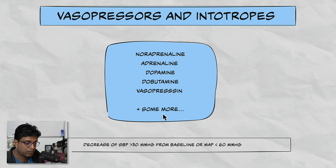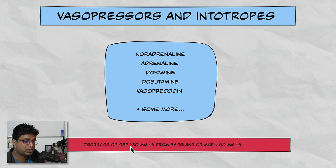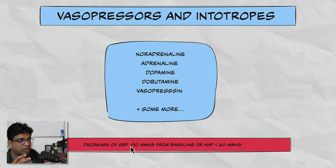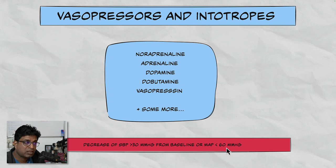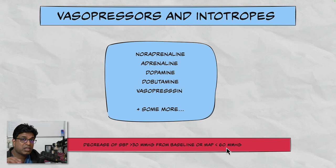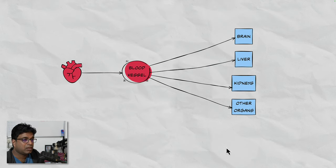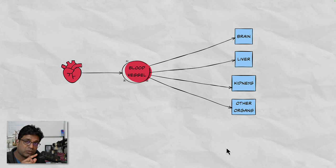What do we mean by shock? If from the baseline the systolic blood pressure has fallen more than 30 mmHg — for example, if you know the patient's blood pressure constantly remains at 140 or 150 systolic — a drop of more than 30 from that is considered shock. Or if the mean arterial pressure is less than 60 mmHg, then we require vasopressors and inotropes to maintain blood pressure. Basically, both these drug classes are required to maintain mean arterial pressure, because it is the perfusion pressure of the patient.